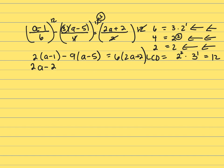2A minus 2 minus 9A plus 45. That's negative 9 times negative 5. Equals 12A plus 12. Combine on both sides. That's negative 7A plus 43 equals 12A plus 12.